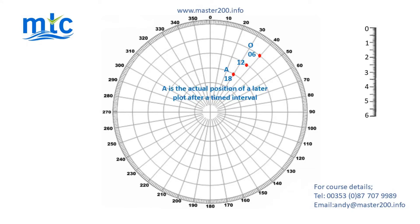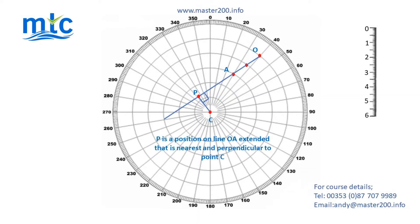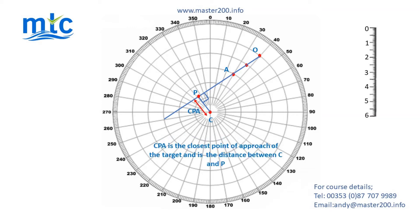A is the actual position of the final plot after a timed interval, which is 18 minutes past the hour. C is the centre of the plotting sheet. P is a position on line OA Extended that is nearest and perpendicular to point C. CPA is the closest point of approach of the target and is the distance between C and P.